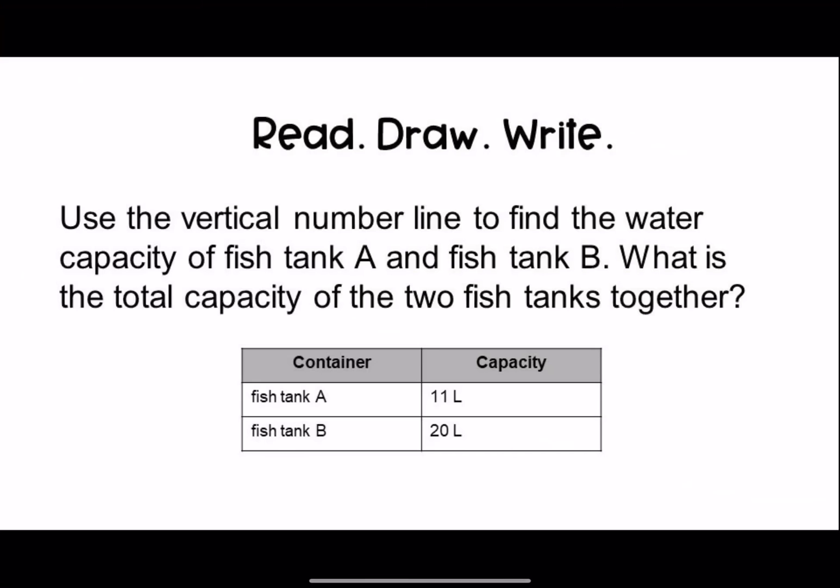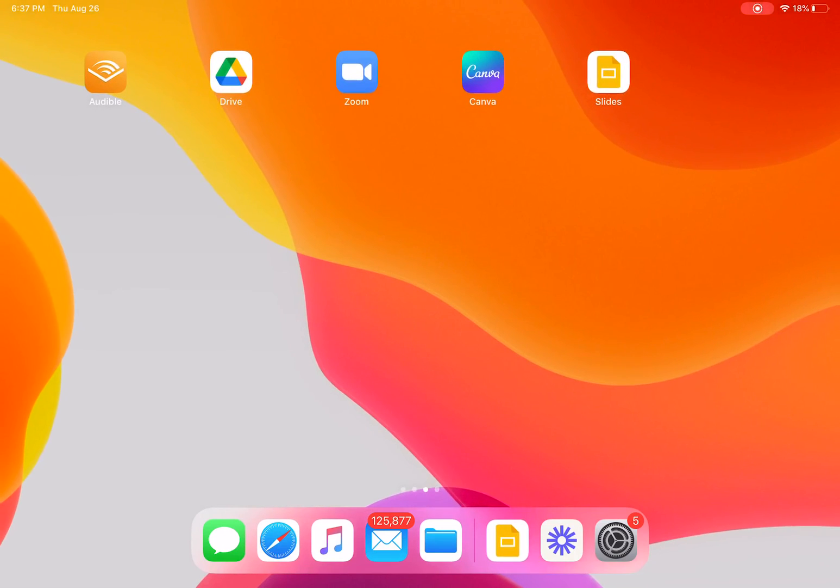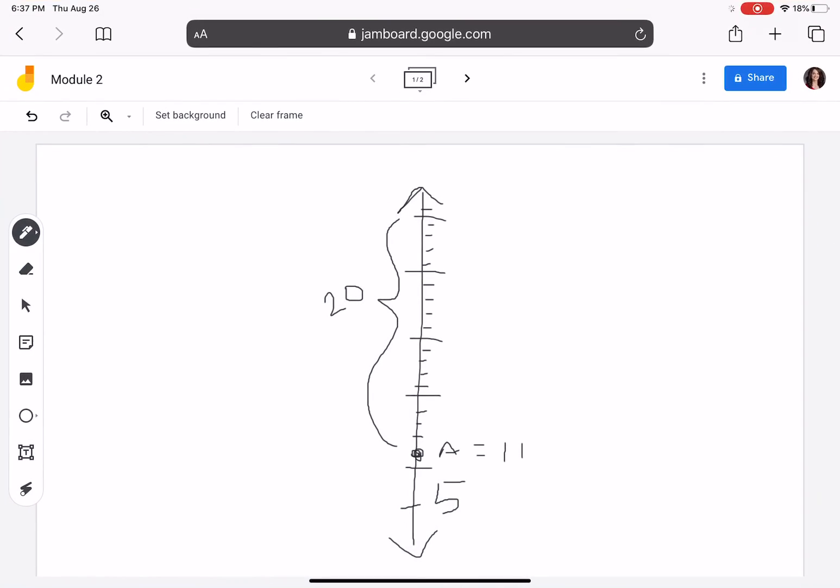What is the total capacity of the two fish tanks together? Counting from the beginning: 11, 12, 13, 14, 15, 16, 17, 18, 19, 20, 21, 22, 23, 24, 25, 26, 27, 28, 29, 30, 31. The capacity of the two fish tanks together is 31.